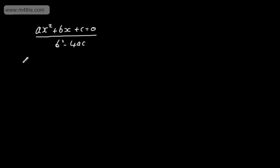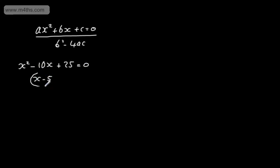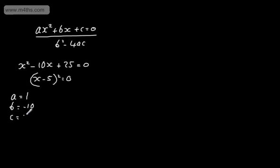Let's look at a quadratic equation: x squared minus 10x plus 25 equals 0. I can factor this as x minus 5 all squared equals 0, so we have a repeated root of 5. Alternatively, I could just compute the discriminant: a is 1, b is minus 10, and c is 25.